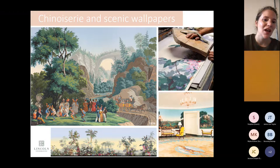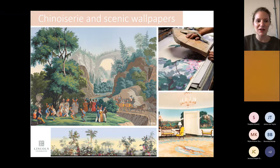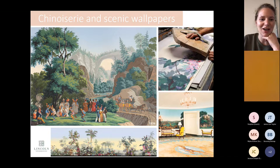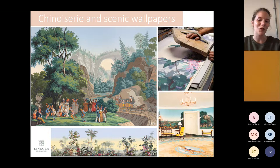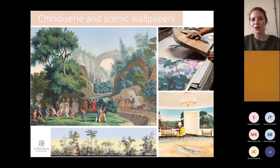One Zuber wallpaper entitled 'Views of North America', designed in 1834, was applied to the White House diplomatic room in the 1960s. It clearly shows people of many different races and backgrounds all getting along — which wasn't exactly how things went in 1834 — so it betrays a kind of political meaning or fantasy. Wallpapers aren't just there for purely aesthetics; they can be used in an almost political manner as well.